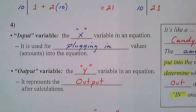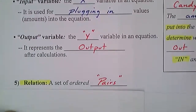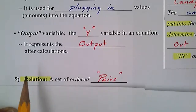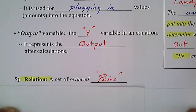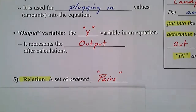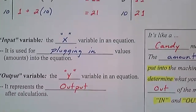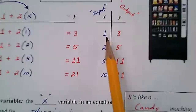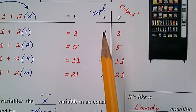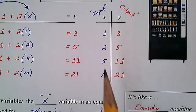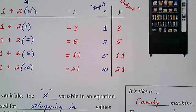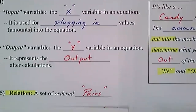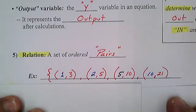Now there's a new vocabulary word: 'relation.' In math terms, a relation is a set of ordered pairs. We're going to take the numbers from our input-output chart — they are partners, pairs. One goes with three, two goes with five, five goes with eleven, and ten goes with twenty-one.